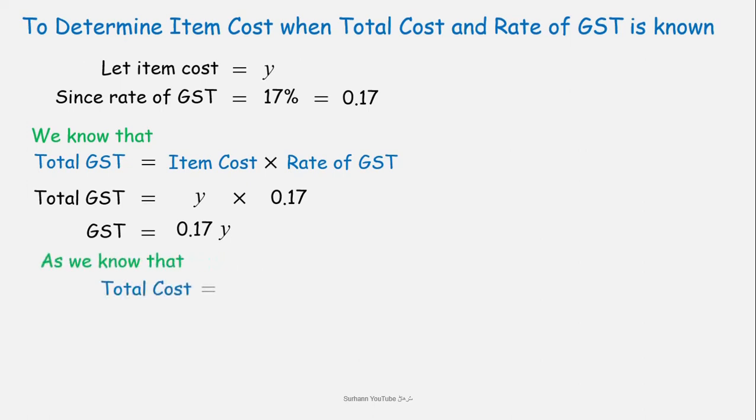We also know that total cost is equal to GST plus item cost. We will write total cost the same, GST value we will write as 0.17Y, and the value of item cost is Y.